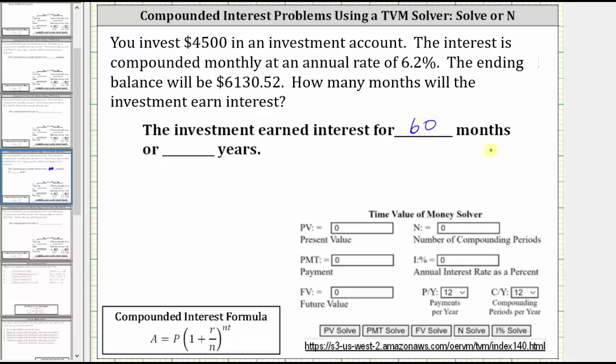60 divided by 12 is equal to 5. 60 months is equal to five years. I hope you found this helpful.